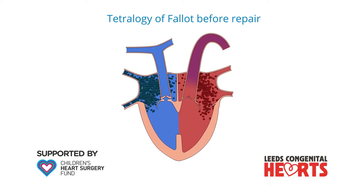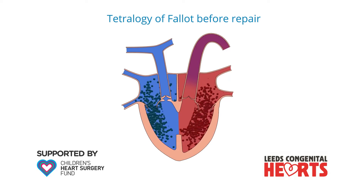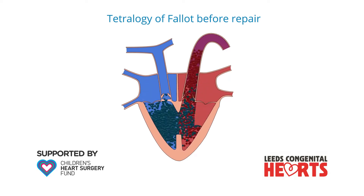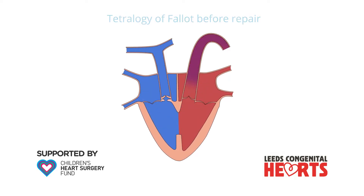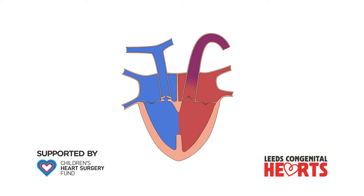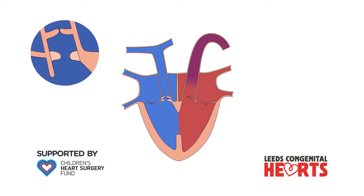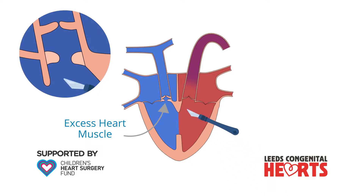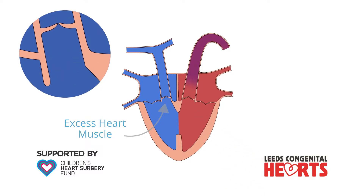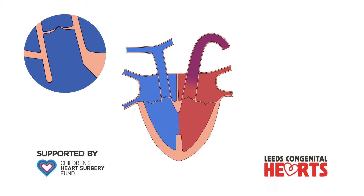Exactly what is required to reduce the obstruction to blood being pumped to the lungs depends on where the obstruction is in an individual patient. Any excess heart muscle under the pulmonary valve is removed. It may be possible to improve the function of the pulmonary valve so that it opens more effectively.